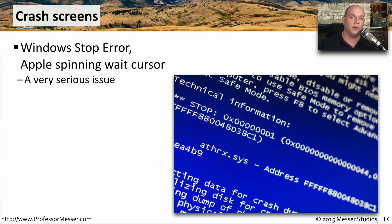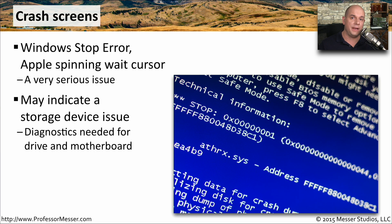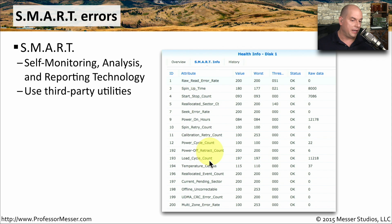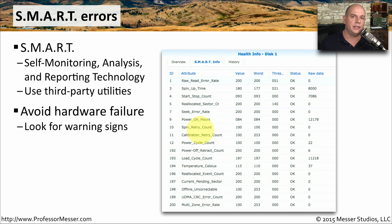Sometimes your storage subsystem causes your operating system to stop completely or cause extensive delays. You might see a Windows stop error or the Apple spinning wait cursor on your screen, indicating that your hard drive is having problems reading or writing. Make sure you have a backup and perform diagnostics on the storage device. One way to get insight about how your drive is operating is by using SMART — Self Monitoring Analysis and Reporting Technology — which is built into many drives today. SMART attributes include raw read error rate, spin up time, start stop count, seek error rate, and load cycle count. These SMART errors give you a heads-up so you know which drive to replace before it fails completely.